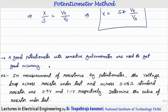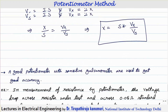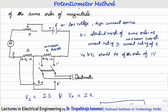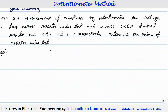Let us take an example. In the measurement of resistance by potentiometer, the voltage drop across the resistor under test and across a 0.05 ohm standard resistor are 0.9 volts and 1.1 volts respectively — determine the value of the resistor under test. The voltage drops are approximately 1 volt, achieved by adjusting the variable resistor based on the rough known value of the resistance.